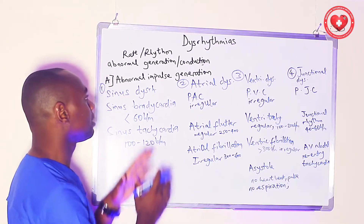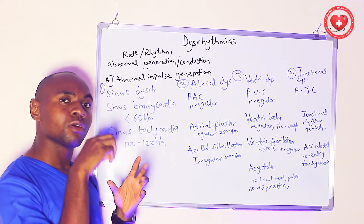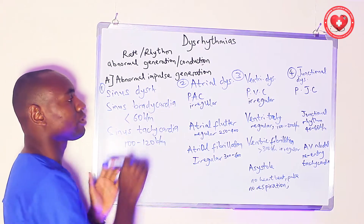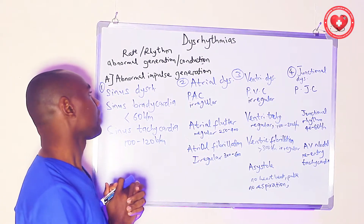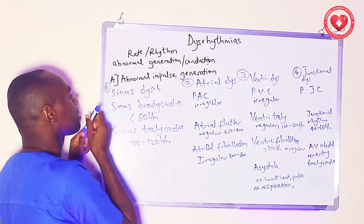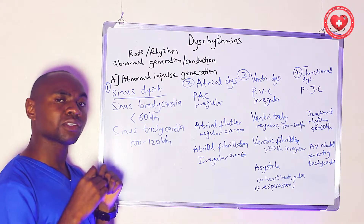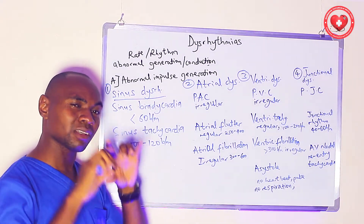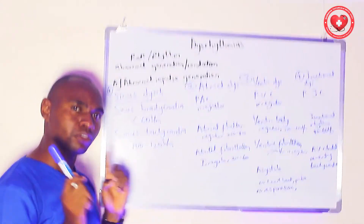I have classified them according to where they are generated from — that is, abnormal impulse generation, the sites where the impulse originates. The first category is sinus dysrhythmias: abnormal rhythm and rate of the heart that originates from the sinoatrial node.